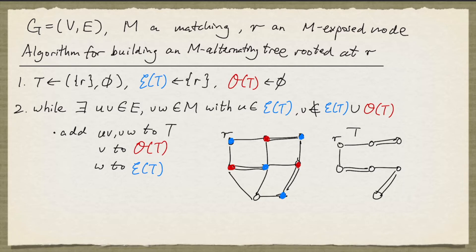Now, there are some properties that we can write down immediately. The first is that every node in the tree is joined by an M-alternating path to R, and R is the only M-exposed node in the tree.